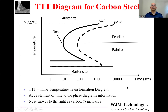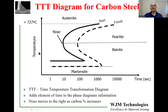What is a TTT diagram? In a previous video we talked about phase diagrams, which are called equilibrium diagrams because phases form at equilibrium at a given temperature. TTT diagrams add the element of time — Time Temperature Transformation. On the vertical axis we have temperature, on the horizontal axis we have time, usually on a logarithmic scale: one second, ten seconds, one hundred, one thousand, ten thousand. I'm showing you here a generic TTT diagram for carbon steel.